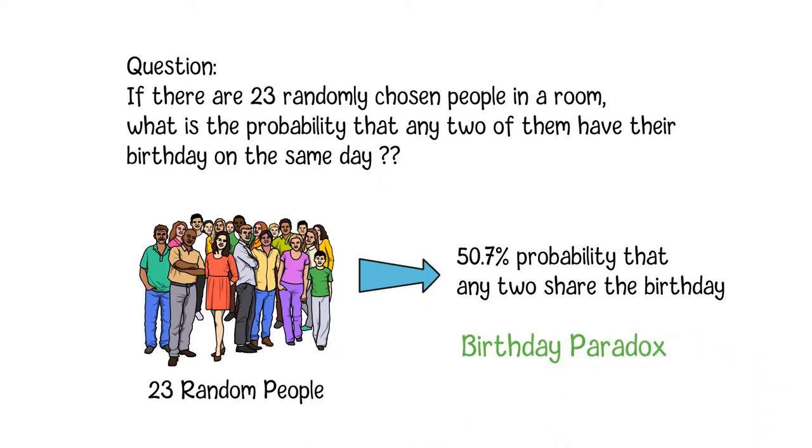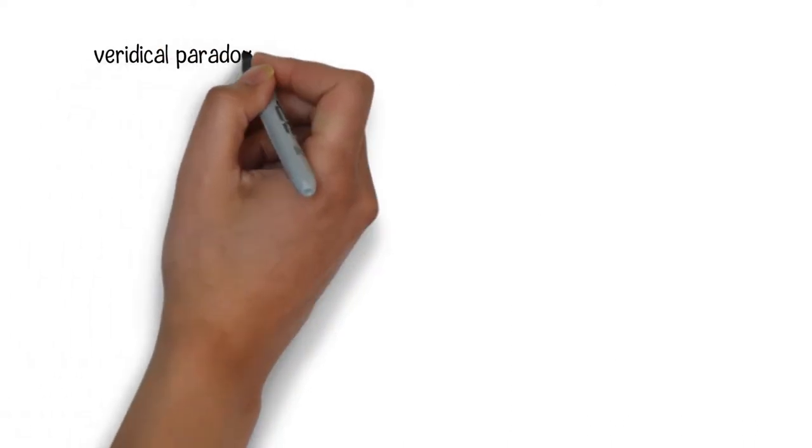This is what the birthday paradox is talking about. Counterintuitively, the probability of a shared birthday exceeds 50% in a group of only 23 people. A more surprising result is that if the number of people is increased to 50 in the room, the probability that two people share the same birthday will be increased to 97%.